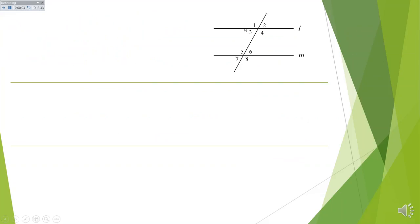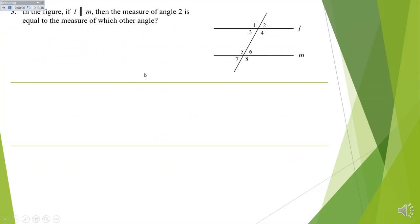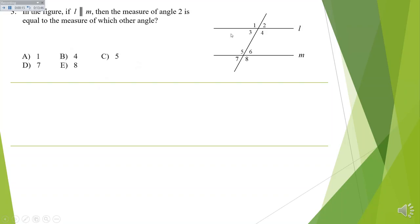Here we've got a whole bunch of angles and they want to know which other angle is equal to angle 2. Your vertical angle is equal to 2, but it's not part of the answers. The alternate interior angle would be the same as 2, but that's not in the answers either. If this angle equals 2 because of a corresponding angle or alternate interior angle, then its vertical angle would have to equal 2 — and there's our answer. You just have to meander around.